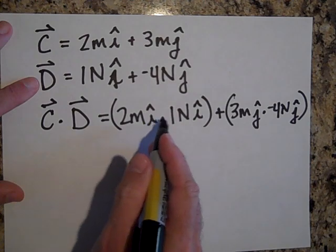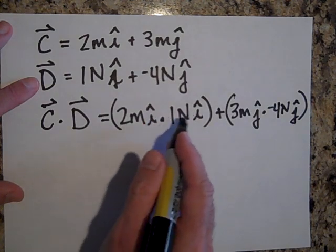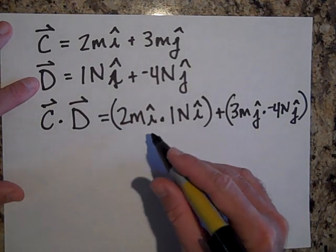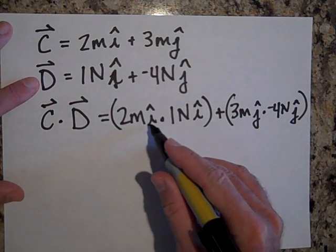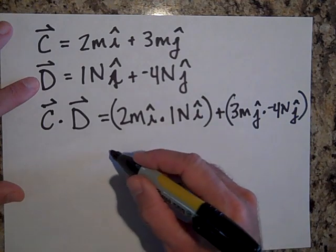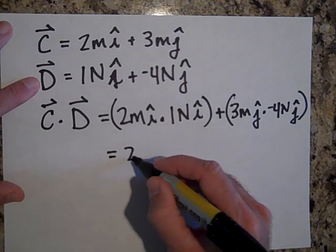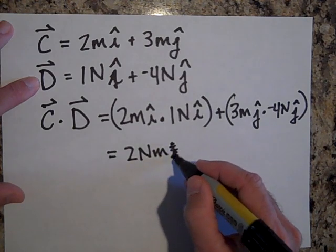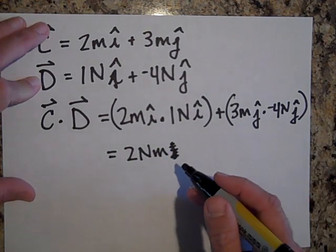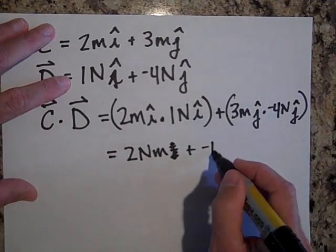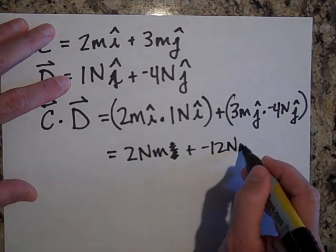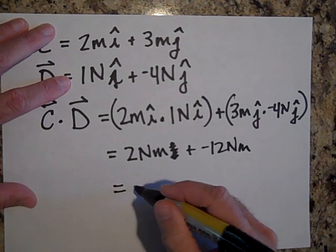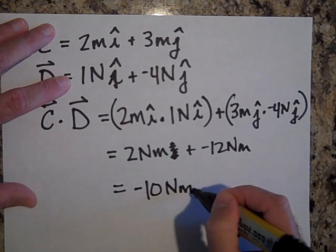Well when I do this, the dots, the i's are going to disappear. So how much of the 2 meters is in the direction of the 1 newton? Well the 2 meters is in the positive x direction and so is the 1 newton, so when you do this it gives you just 2 newton meters. You lose the direction. Plus negative 12 newton meters. So C dot D gives me just negative 10 newton meters. Notice that's a scalar quantity.